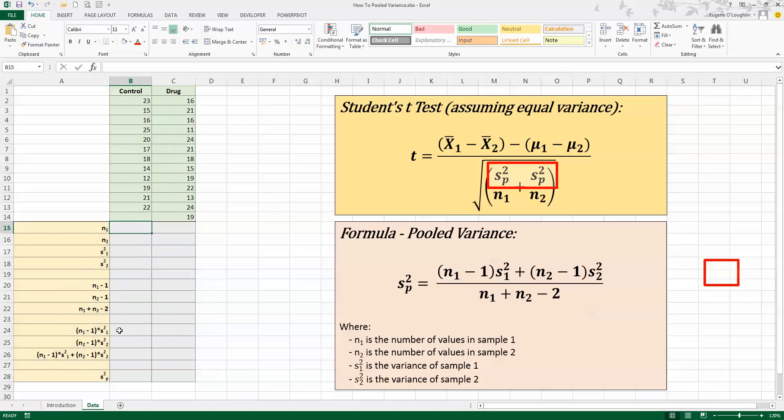N1 is the number of values in sample one which is going to be my control. So I'm going to count these using the count function equals COUNT, opening bracket, and with my mouse I'm selecting all the data in column B, closing bracket and you can see that I've got a count of 12. Now I know I can count this manually and just type in the number but it's always good to just do formulas wherever possible in Excel. So I'm doing the same with the drug treated group. We can see we have 13 values in that group. So now we've got N1 and N2 and those are four of our six values in our pooled variance formula.